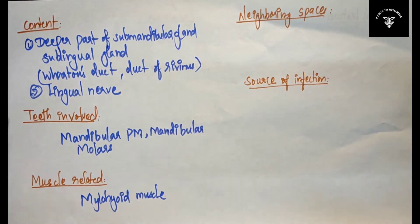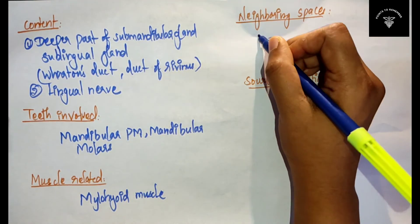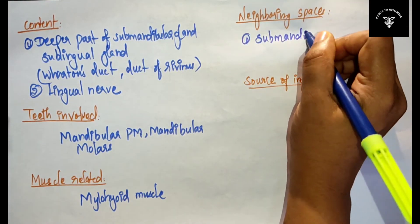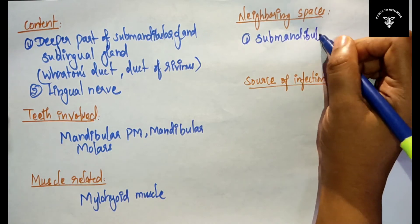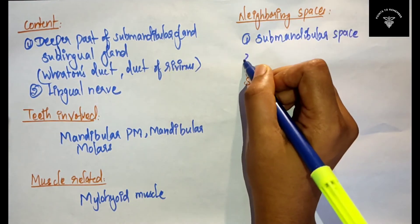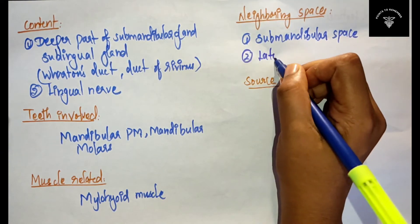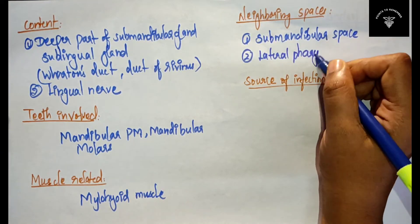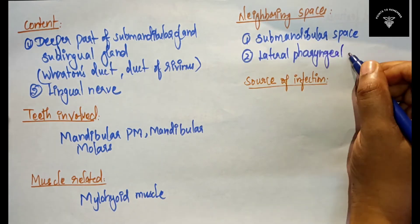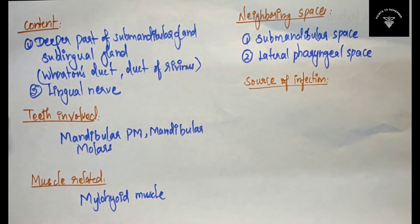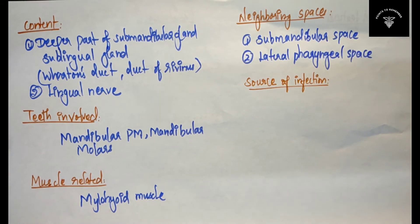Moving on to the neighboring spaces: the spaces near to the sublingual space are the submandibular space and the lateral pharyngeal space.